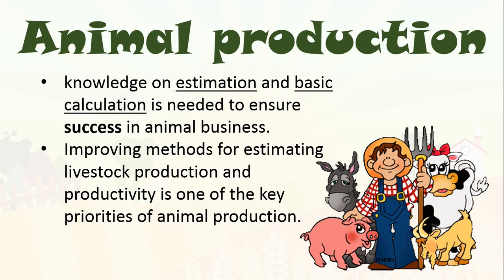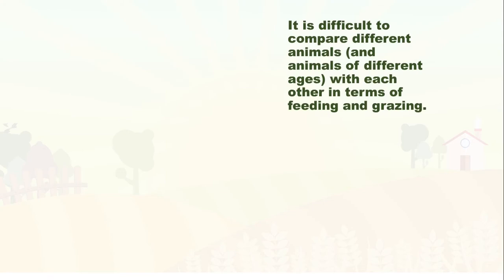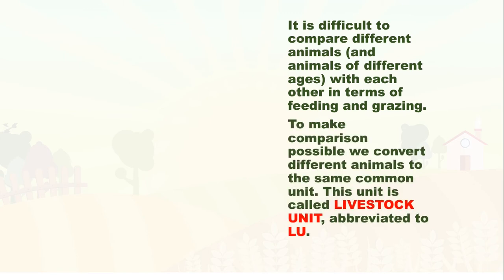It improves methods for estimating livestock production, and productivity is one of the key priorities of animal production. It is difficult to compare different animals and animals of different ages with each other in terms of feeding and grazing. To make comparison possible, we can convert different animals to the same common unit — this is called the livestock unit, abbreviated as LU.